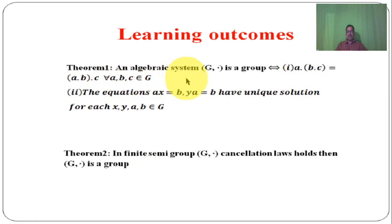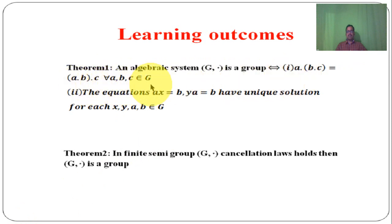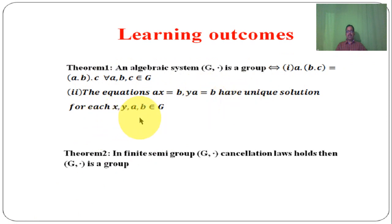Theorem 1: An algebraic system G dot is a group if and only if (A dot B) dot C is equal to A dot (B dot C) for each A, B, C belongs to G, and the equations AX equal to B and YA equal to B have a unique solution for each X, Y, A, B belongs to G. Theorem 2: In a finite semi-group G dot, if cancellation law holds, then G dot is a group.